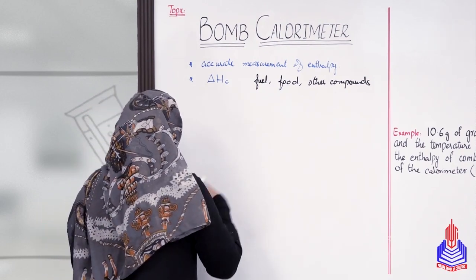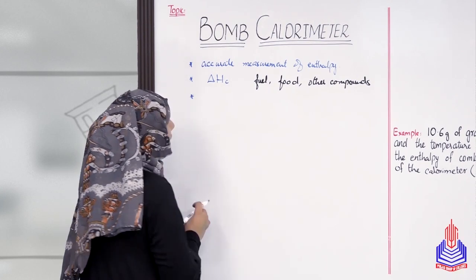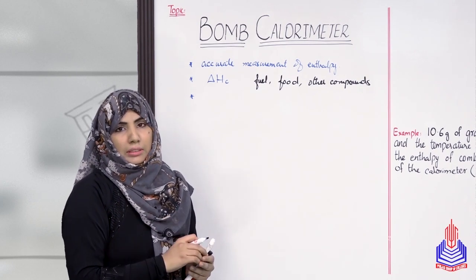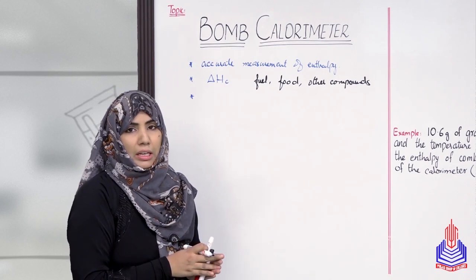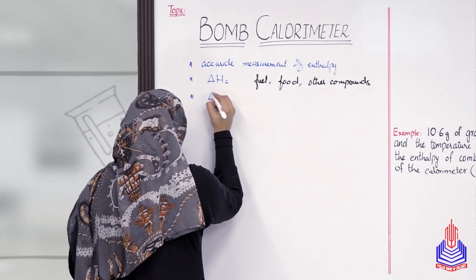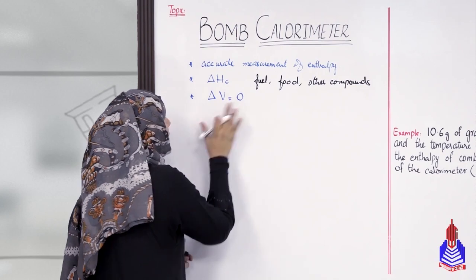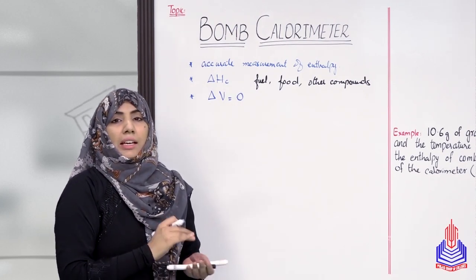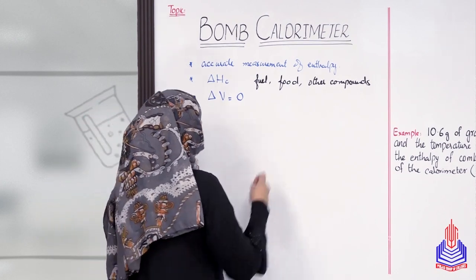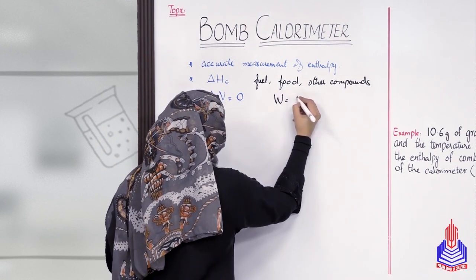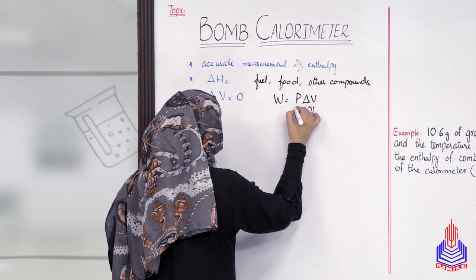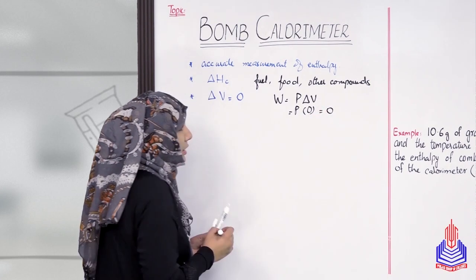Third important point है - bomb calorimeter को study करने के लिए एक condition रखते हैं: volume will remain constant throughout the reaction, यानि change in volume possible नहीं होगा। क्यूंकि जो vessel होती है that is quite closed, और वहां पर change in volume की गुंजाइश नहीं होती - delta V will be 0. इसका मतलब है कि अगर change in volume possible नहीं है, तो work done 0 हो जाएगा।